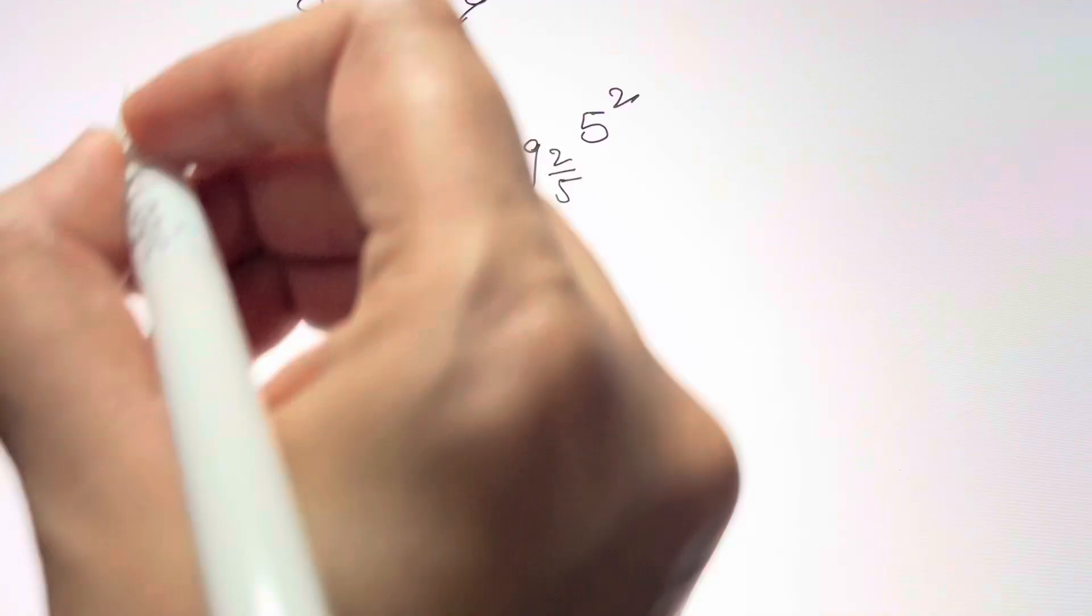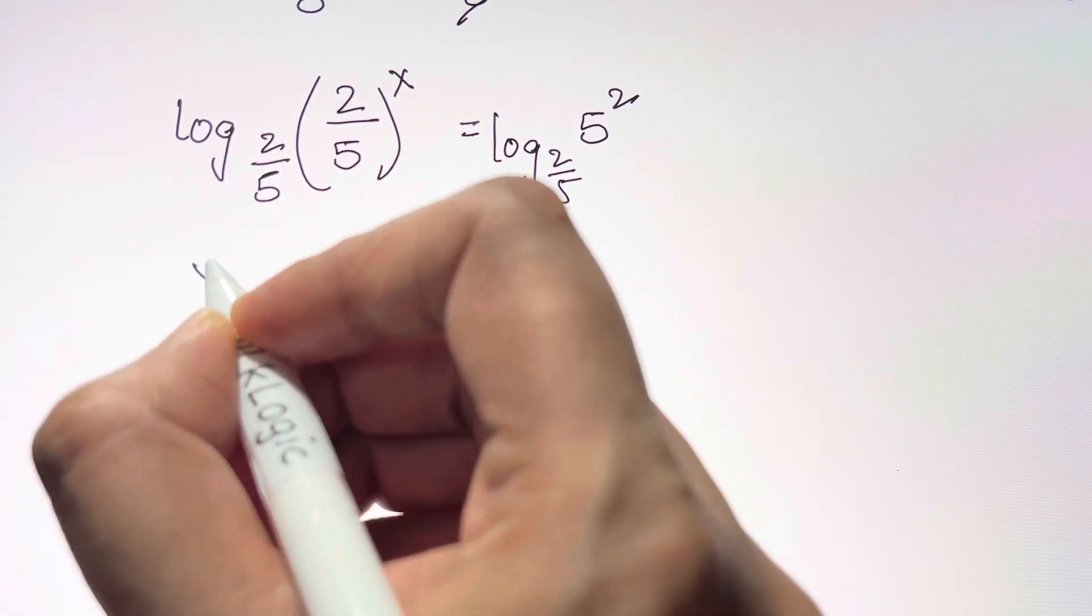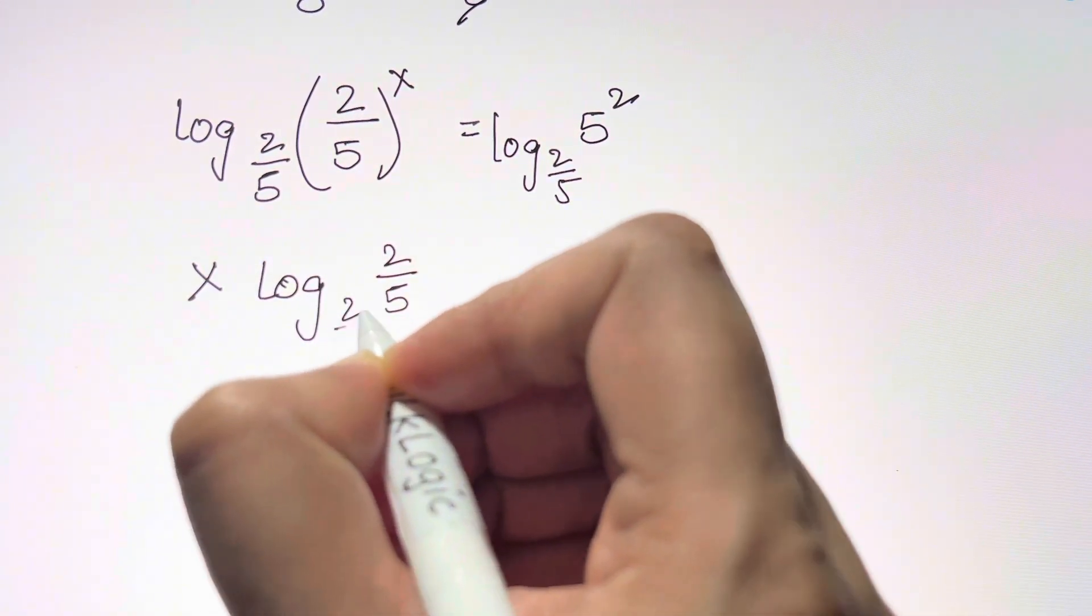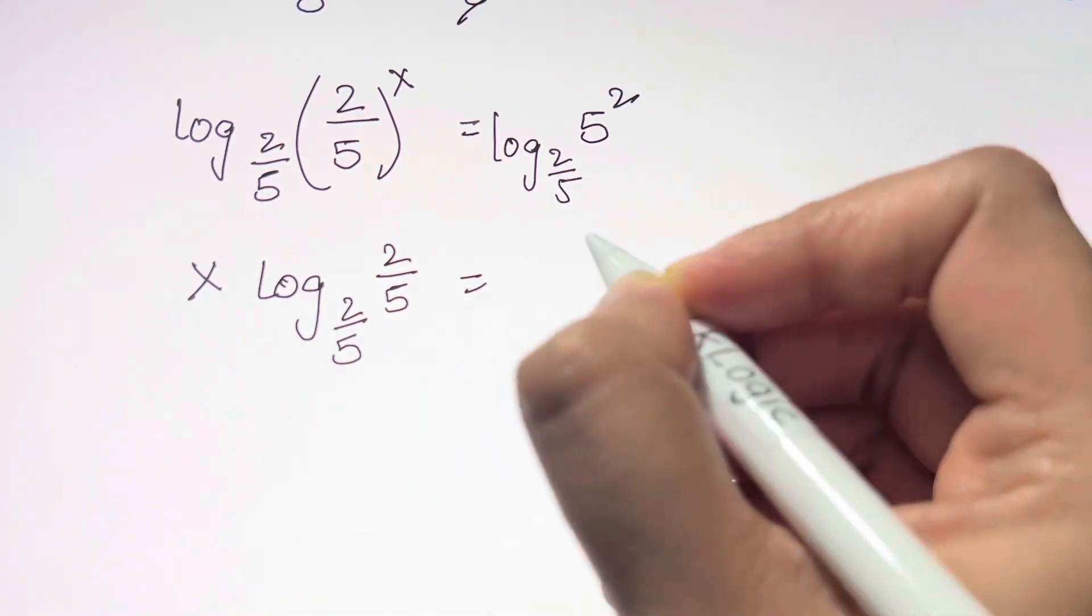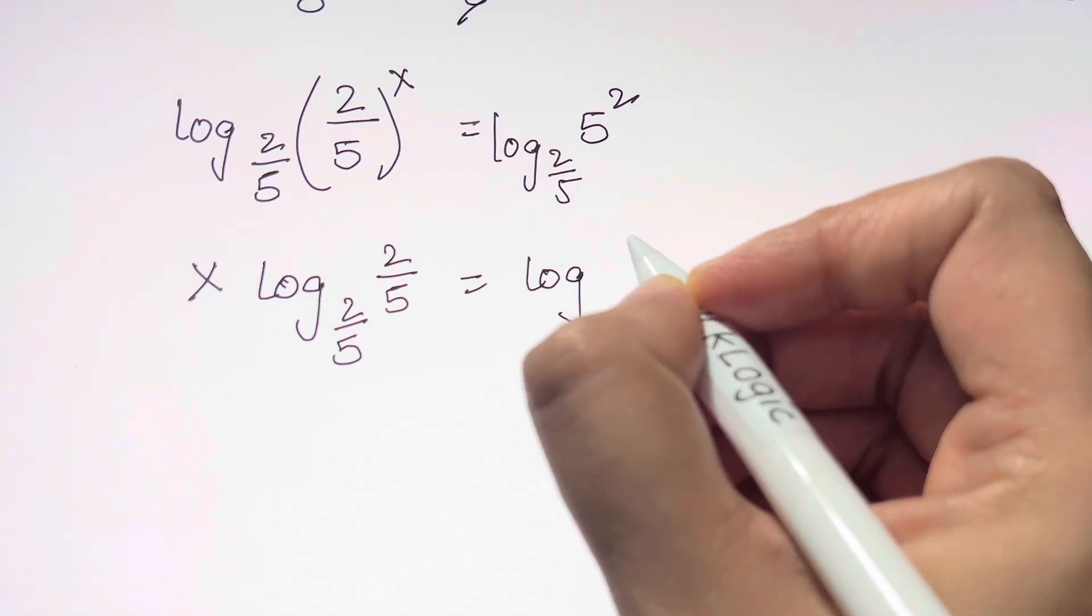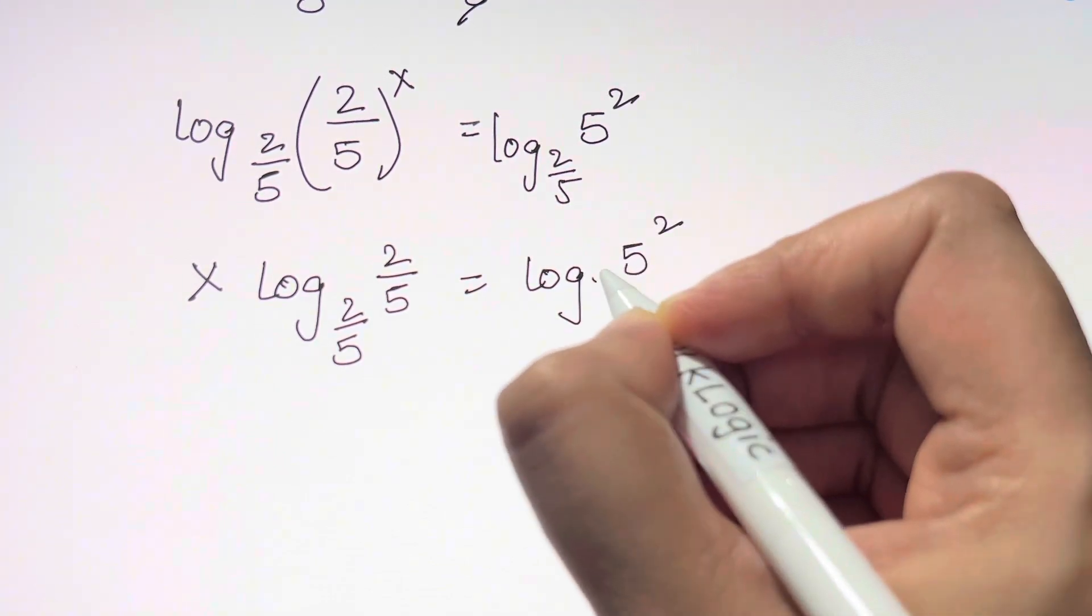Now as you can see, you can cancel out this and you're left with x, or bring x aside. You get log base (2/5) of (2/5) equals log base (2/5) of 5^2.